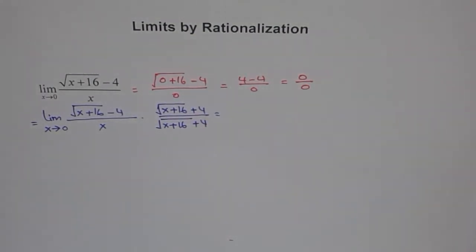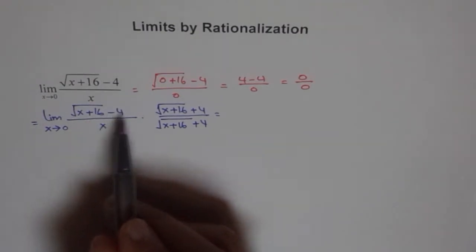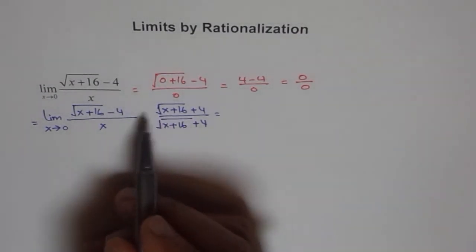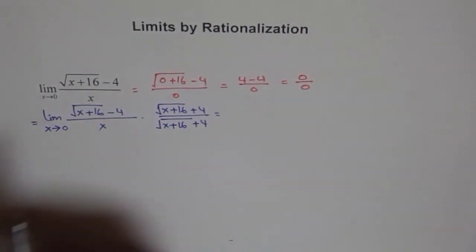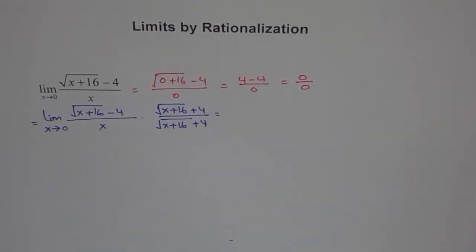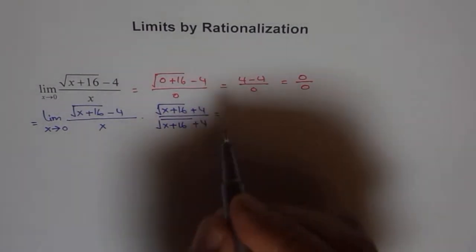So, we get x plus 16 plus 4 over square root of x plus 16 plus 4. And if we do that, then in the numerator, we have a minus b times a plus b. And when we multiply, we get a square minus b square. So, we get rid of the radical.